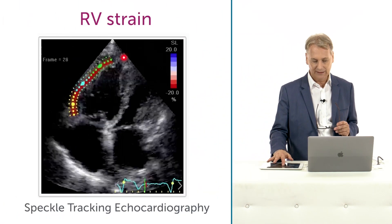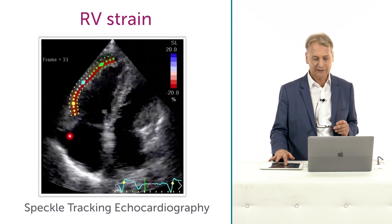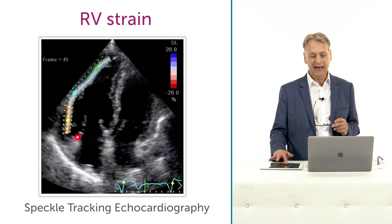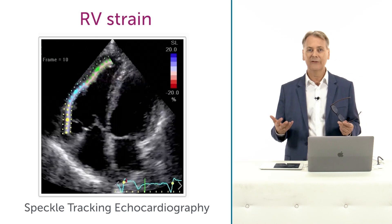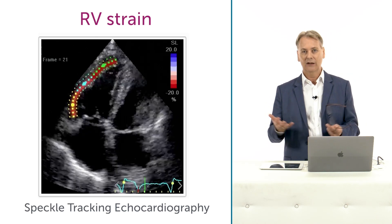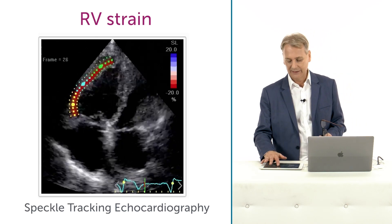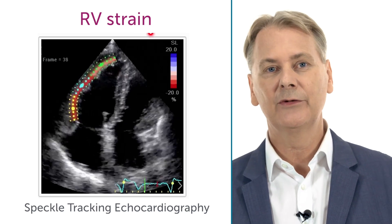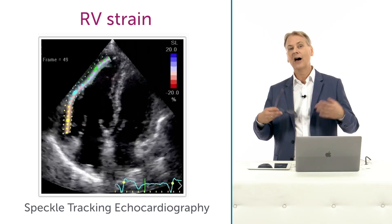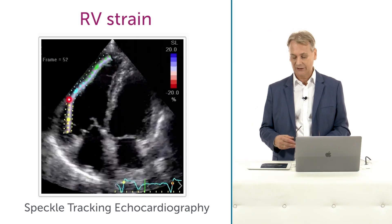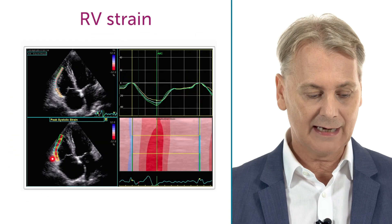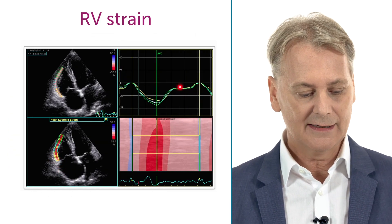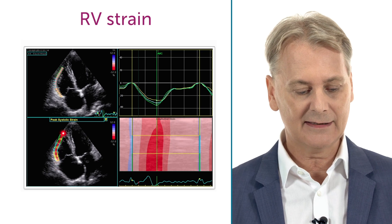In this case we're only tracking the lateral wall. We then perform the analysis and the system gives us a percentage value of contraction of the lateral wall. This methodology allows a lot of calculations — not only can we look at the entire myocardium but also at the individual segments: the base, the mid, and the apex.